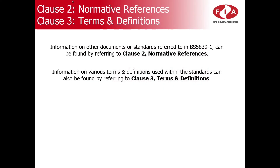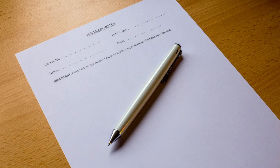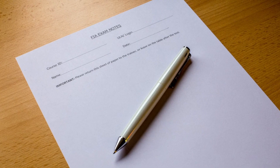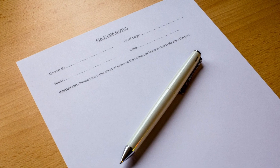There are some other clauses that may become useful during the exam. Clause 2, titled Normative References, provides information on other documents and standards that are referred to within BS 5839 Part 1, and Clause 3 provides details on some of the terms and definitions used within BS 5839 Part 1. Before the examination, you will also be provided with FIA exam notepaper. You may use the exam notepaper during the examination to make notes and to work through your answers to aid you during the examination.